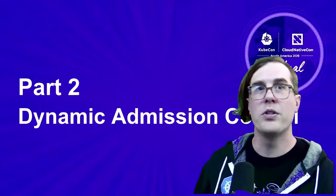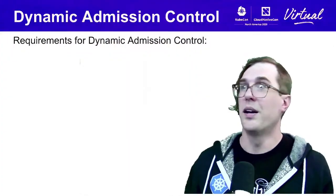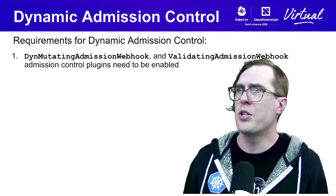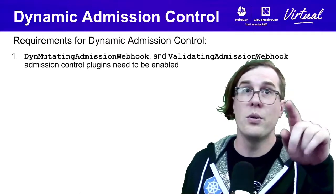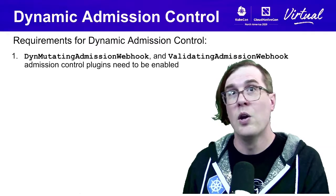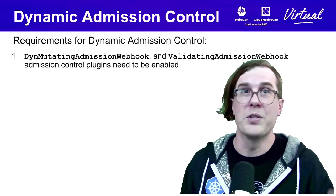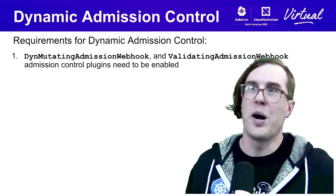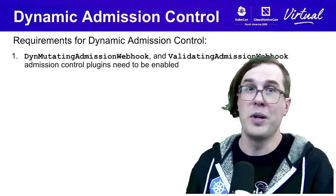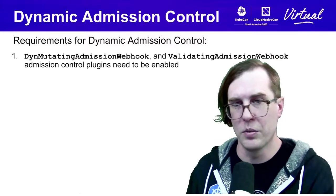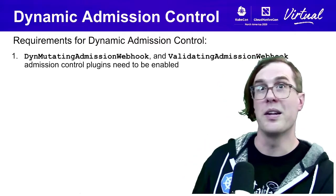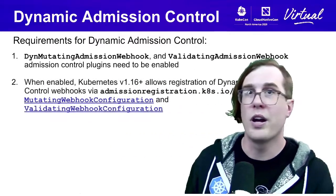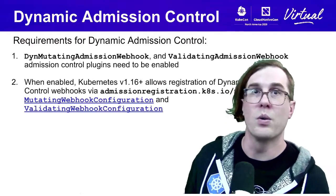On to part two: dynamic admission control. This is where things get more complicated. You're going to need two admission control plugins enabled, or else dynamic admission control won't work at all. If the plugins aren't enabled correctly, your operators and extension points — or even the whole API — might end up in a read-only state if the deny plugin is enabled unintentionally. You should have those enabled by default with 1.16 or newer, especially to get V1 versions of the mutating and validating webhook configuration kinds.